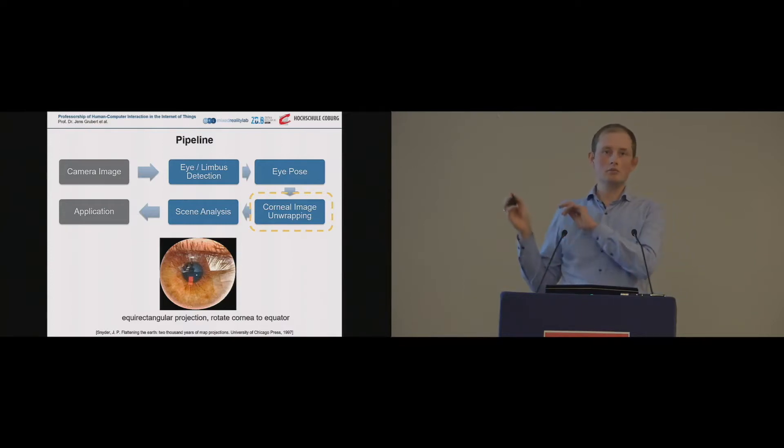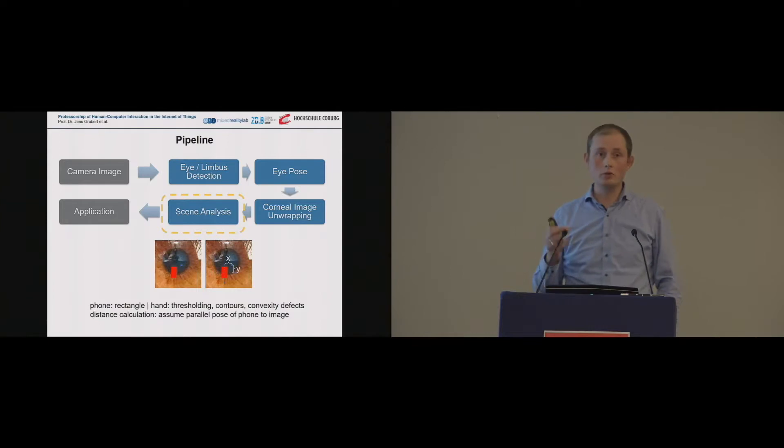And afterwards, you can basically apply any computer vision algorithm that you want to. And in our case, we basically want to detect the mobile phone and the finger. And this is what we do with very simple computer vision techniques. So nothing fancy here. Simple marker detection, rectangle detection, and also hand detection, actually similar to what was shown before here. So these are the basic vision algorithms that we apply here.